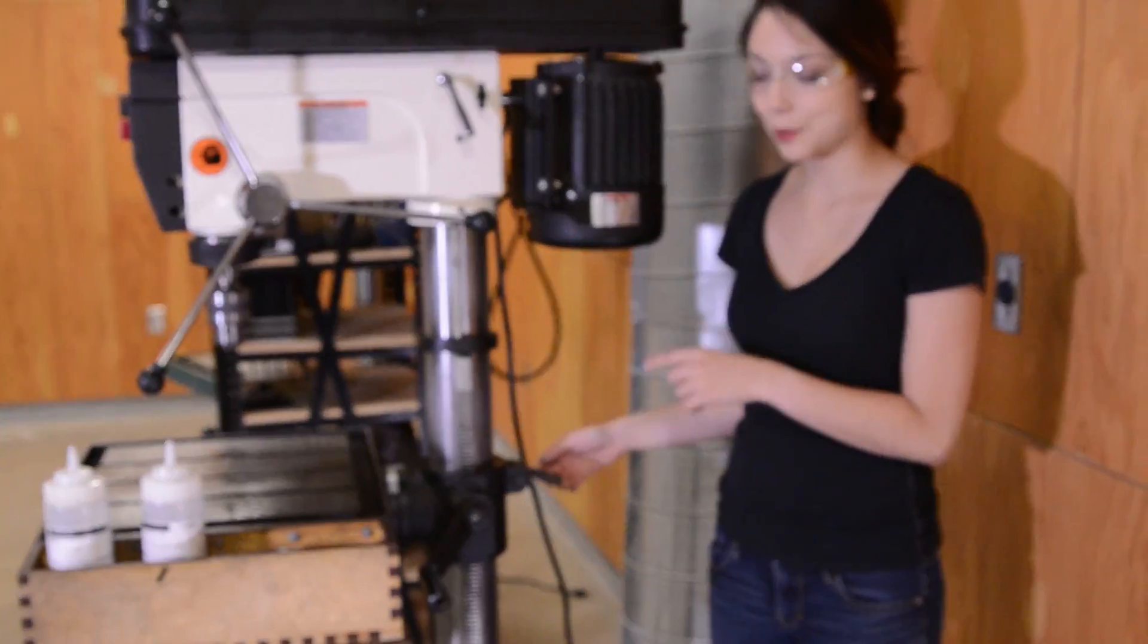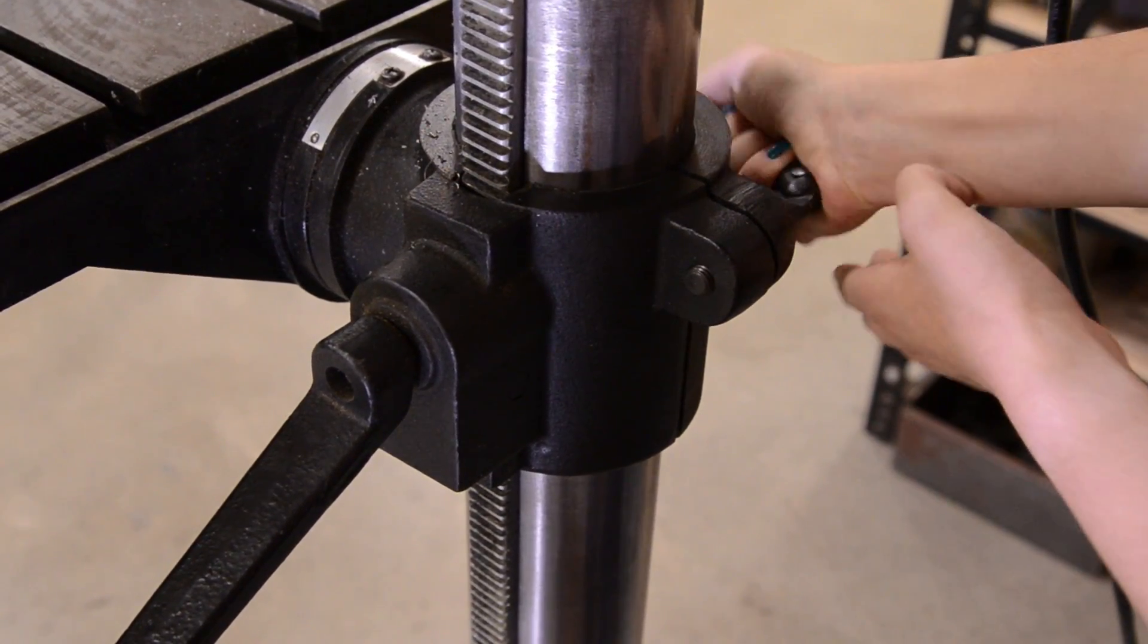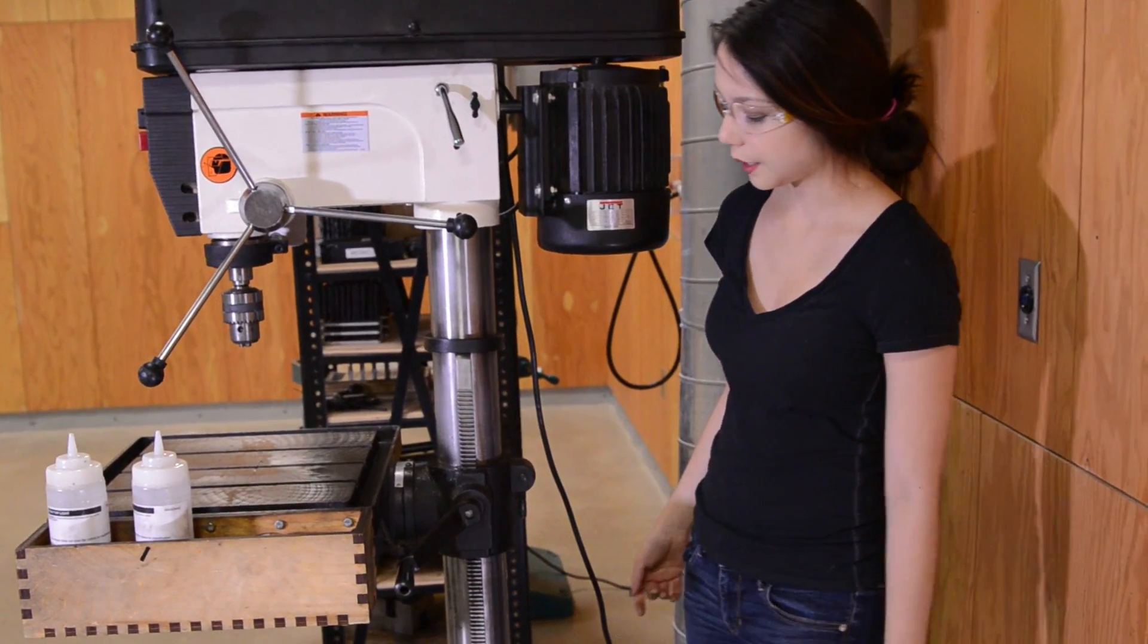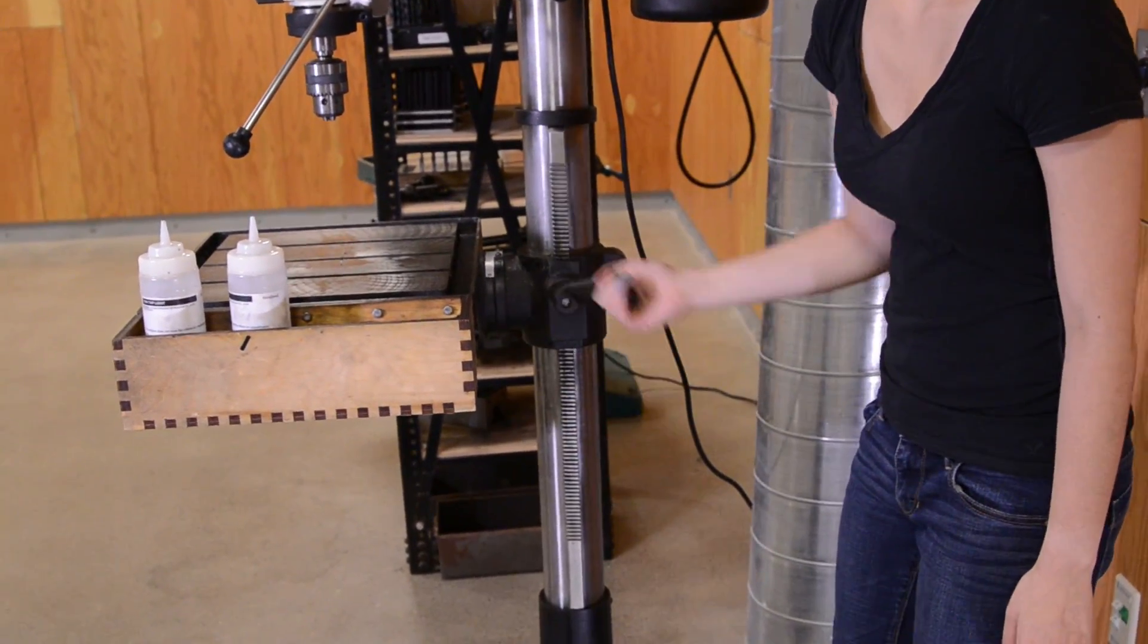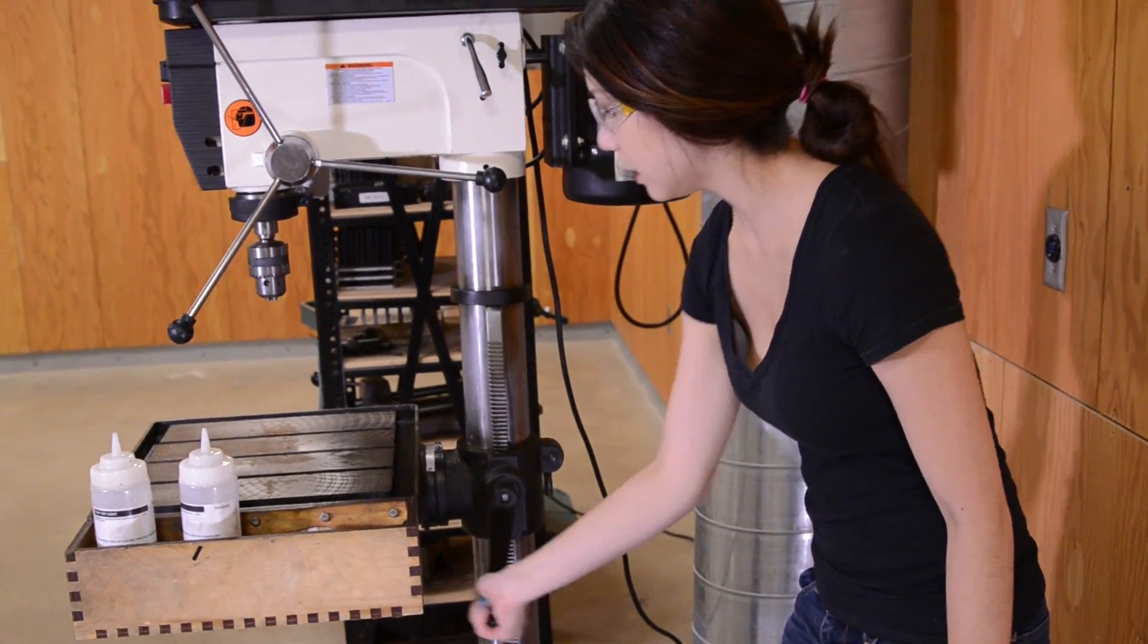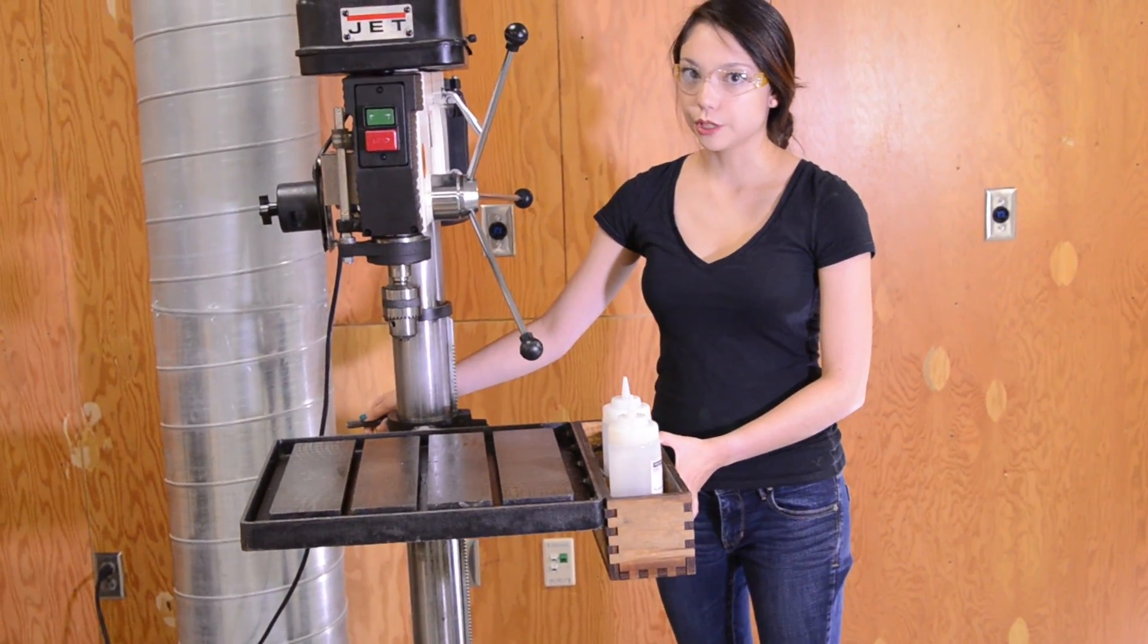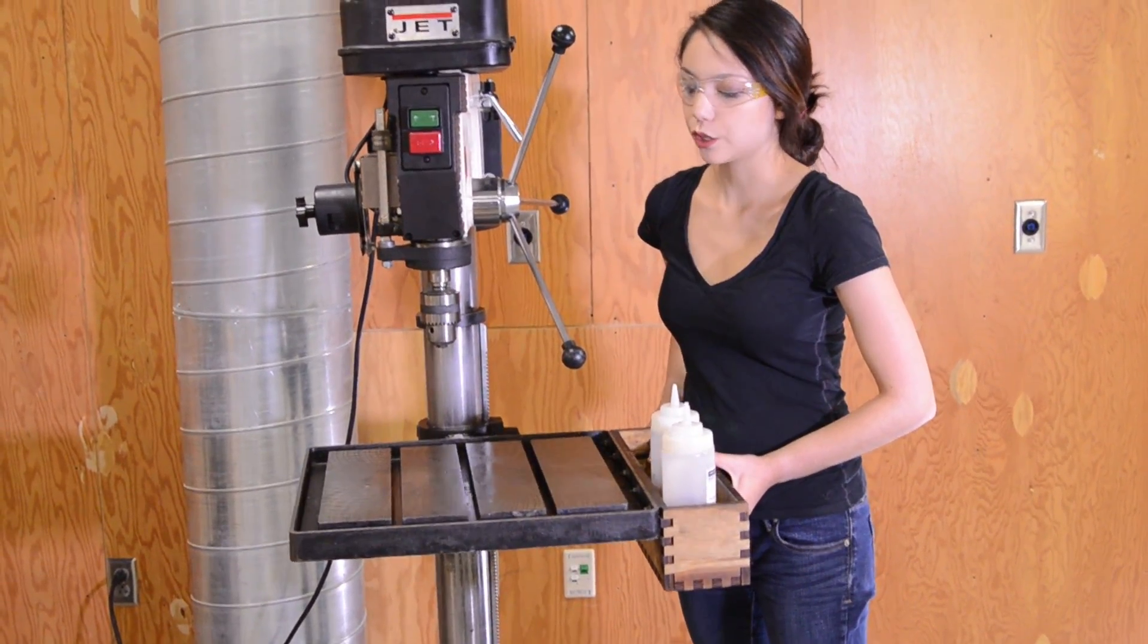Alright, to adjust this table, you want to loosen the lock on the adjustment so that it's kind of freely swinging. And then you can use this crank to make it lower or to make it higher. While this is loosened, and only while this is loosened, you can also rotate the table so that you can make sure your hole is in the right place.